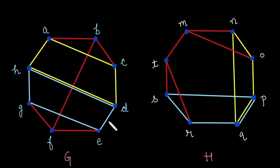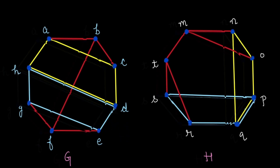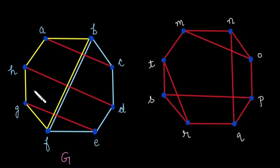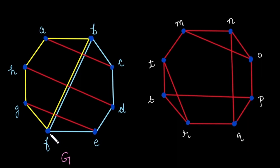Now let's try to find a simple circuit of length 5. In graph G there are two simple circuits of length 5. The first starts from vertex F: F-B, B-A, A-H, H-G, G-F — that is five edges, so its length is 5. The second simple circuit of length 5 is F-E, E-D, D-C, C-B, B-F.